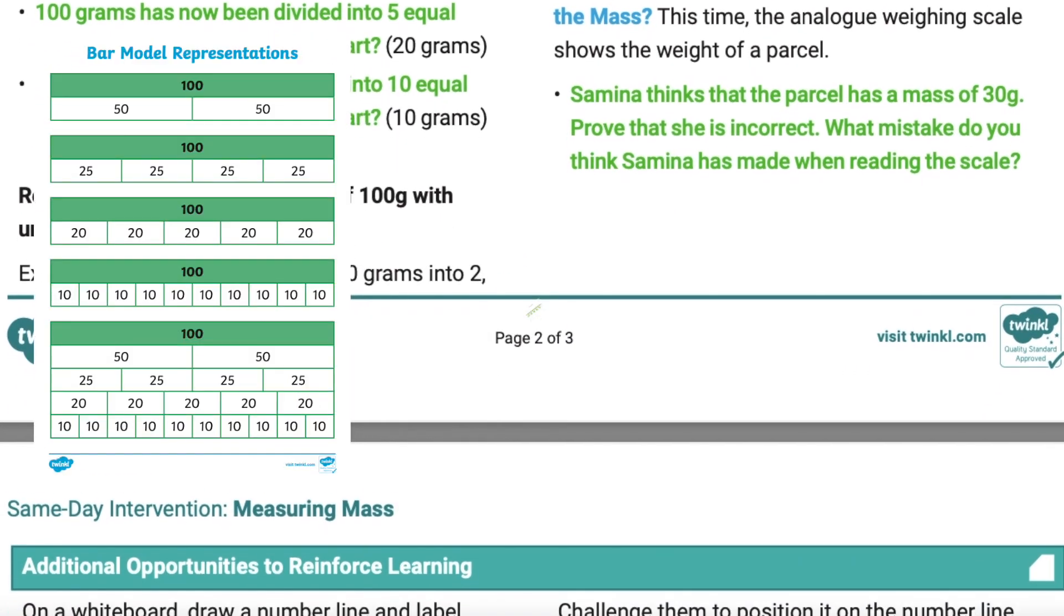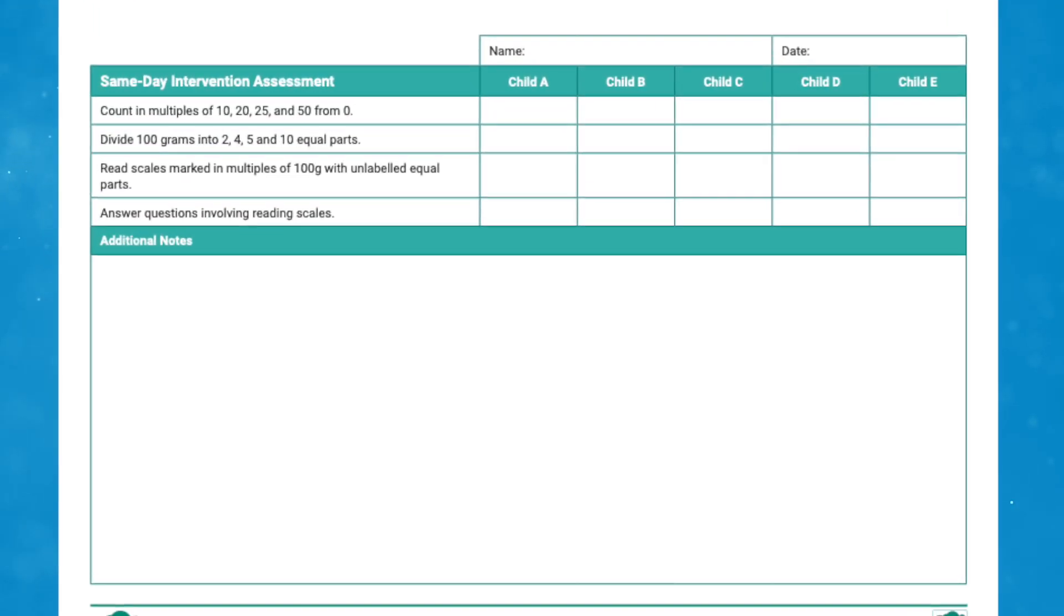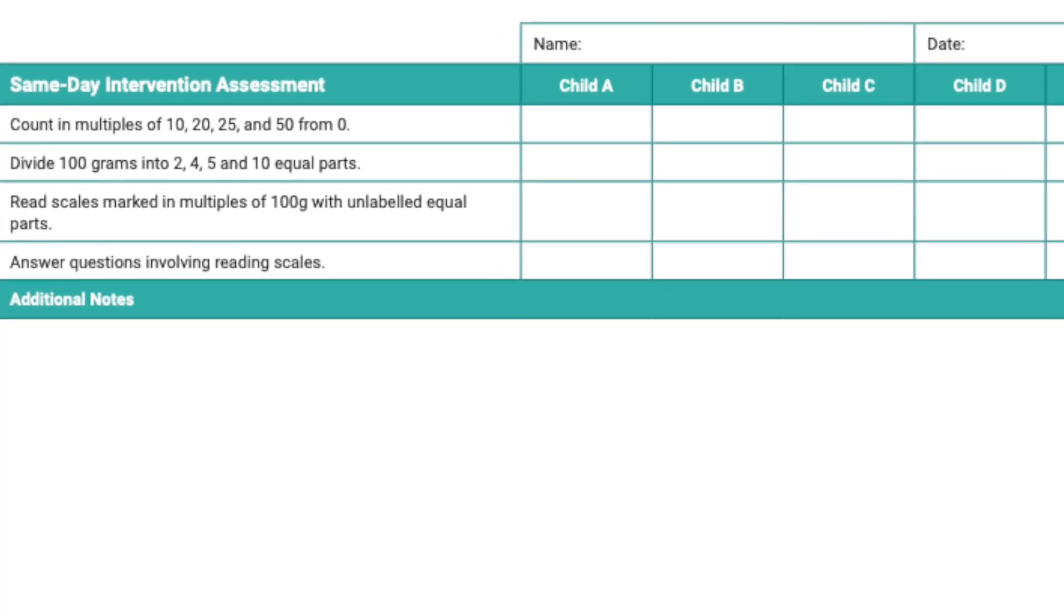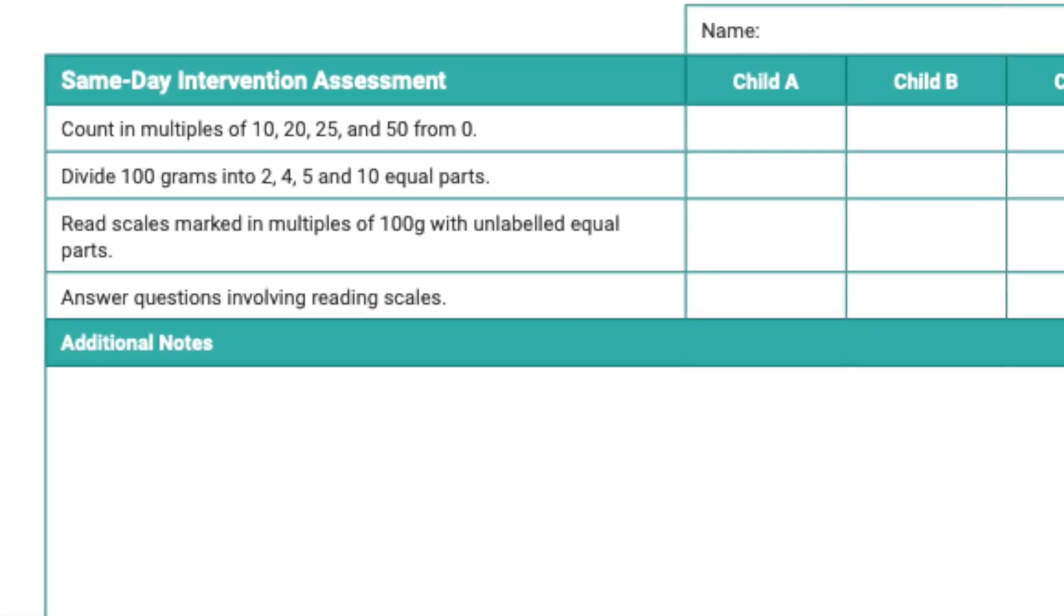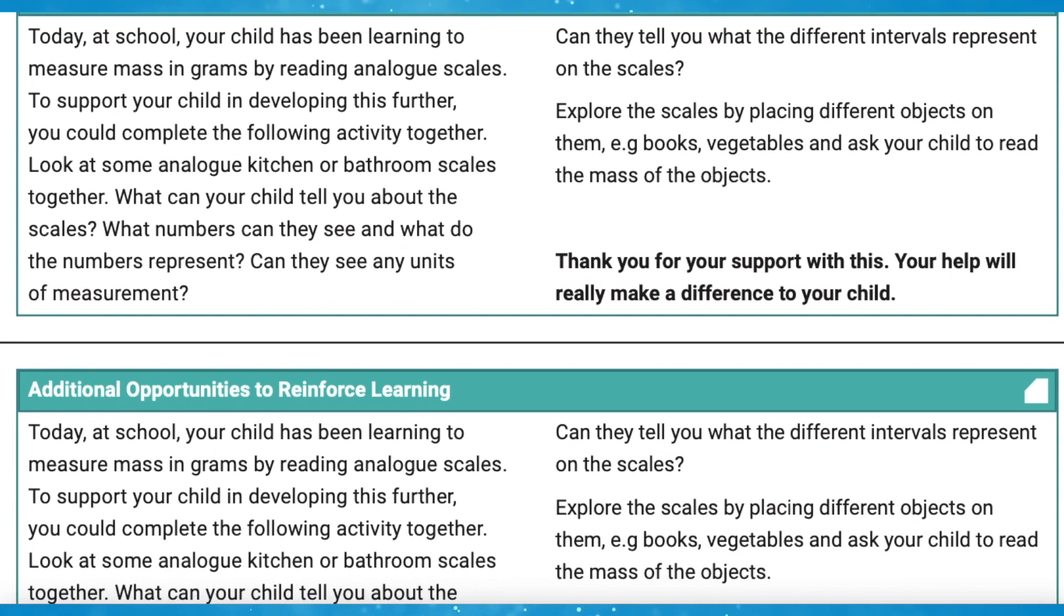It includes practical activities which will engage the children and make their learning fun. The feedback sheet provided allows the adult leading the session to take notes throughout and record whether children have understood the learning objectives. Finally, a home learning slip can be sent home with the students to consolidate their in-school learning.